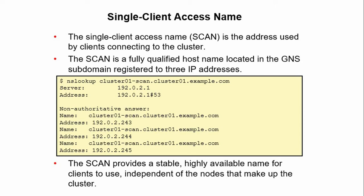If you use GNS and you have DHCP support, then the GNS will assign addresses dynamically to the SCAN. If you do not use GNS, the SCAN should be defined in the DNS to resolve to a total of 3 addresses assigned to that name. This should be done before you install the Oracle Grid Infrastructure.